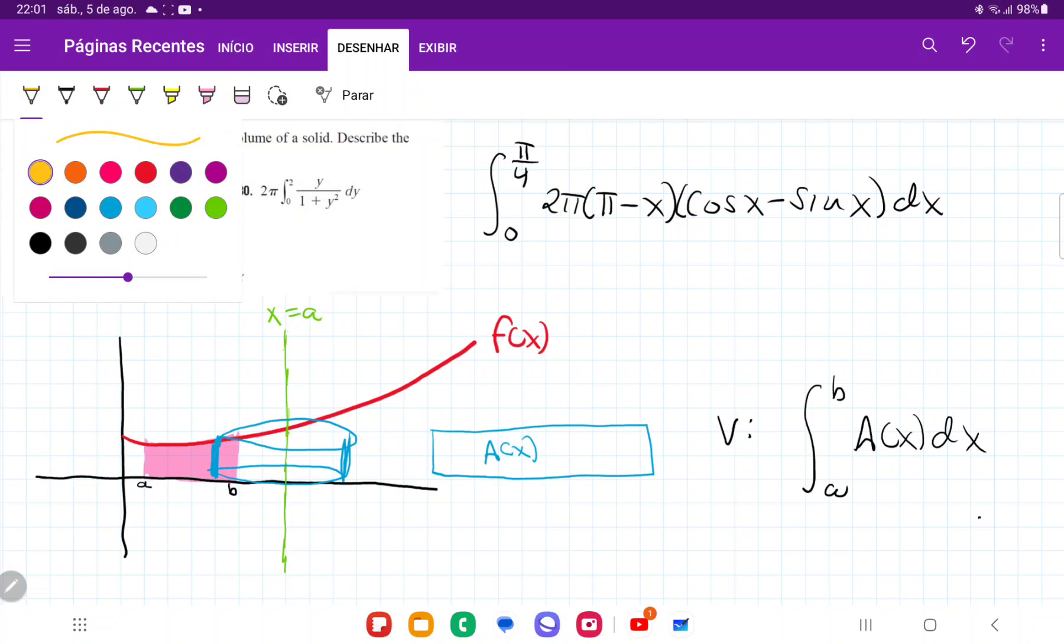And so the area here is just going to be base times height, right? Because it's a rectangle. And the height is pretty easy. This height is just the height wherever it touches that curve. So it's completely defined by f of x. So we're just going to say that this is f of x.